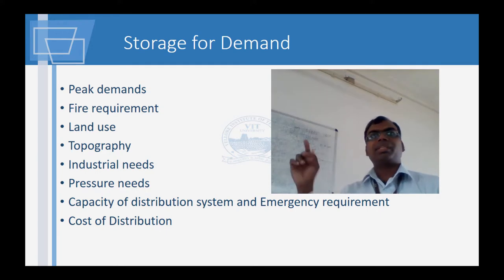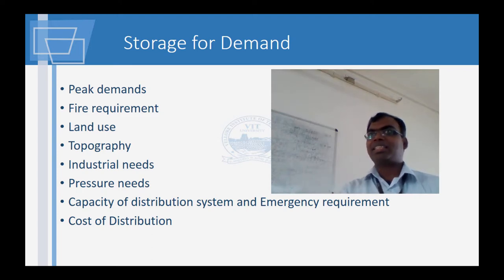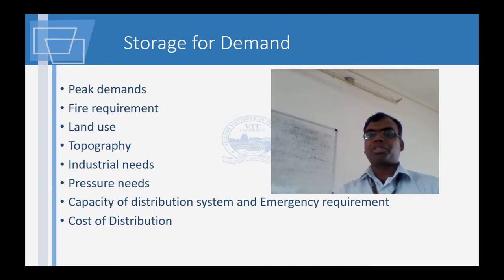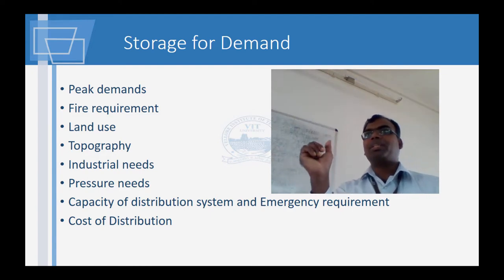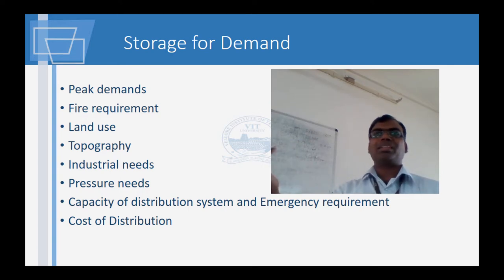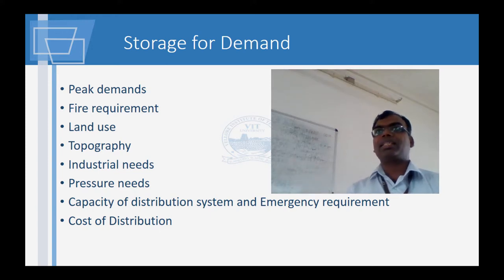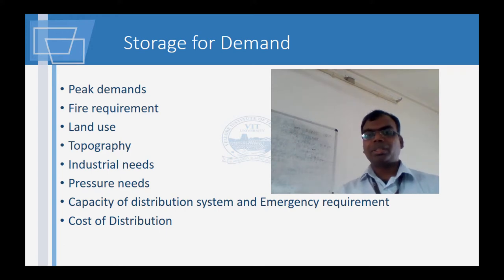Emergency requirements are basically for fire and for situations like Chennai floods where electricity is failing — you still need to have some safe water. Cost of distribution is also a factor: if you have very small pipes, your cost is lesser but your carrying capacity is also much less. The type of pumping you use — whether diesel or electricity — also comes into the cost of construction.